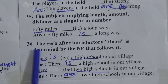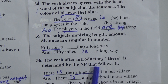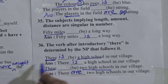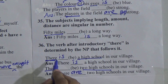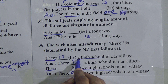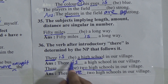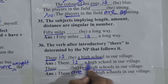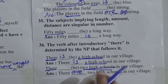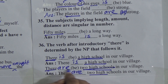Repeating Rule 36: the verb after introductory 'there' is determined by the noun phrase that follows it. If a sentence starts with introductory 'there', we use the verb according to the noun after 'there.' Example: 'There is a high school' — one high school, so 'is.' 'There are two high schools' — two high schools, so 'are.'